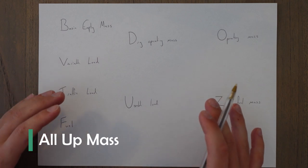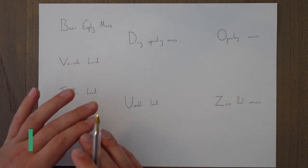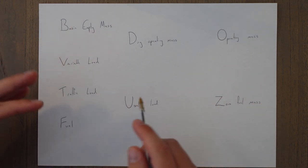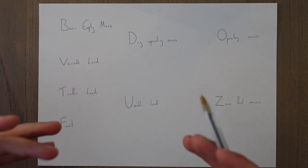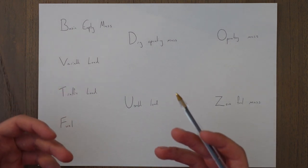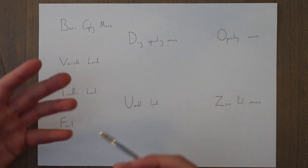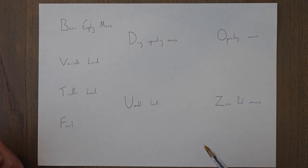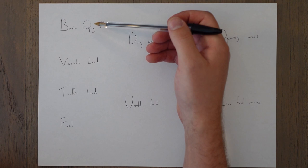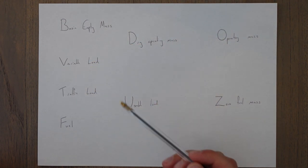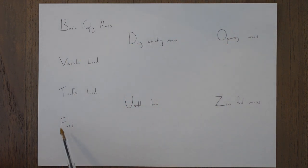This next part of the video will make so much more sense if you've studied mass and balance already, or you can go back and watch some of my earlier videos explaining mass loading in more detail. Apologies for the quality — this is just going to be a quick refresher. So we've got our all-up mass, which consists of four elements: basic empty mass, variable load, traffic load, and fuel.